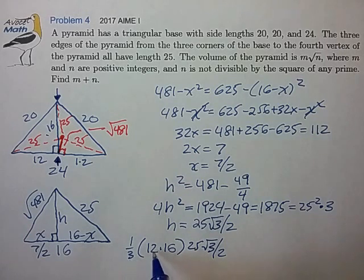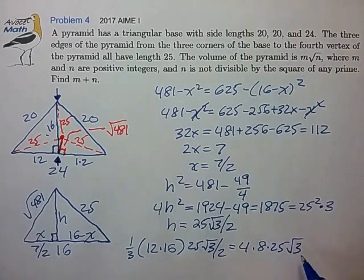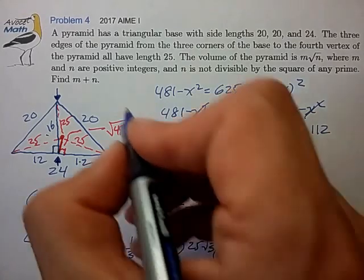Two factors into the 16, three factors into the 12. That's 4 times 8, 25 root 3. 800 root 3. Sum 800 plus 3 is 803.